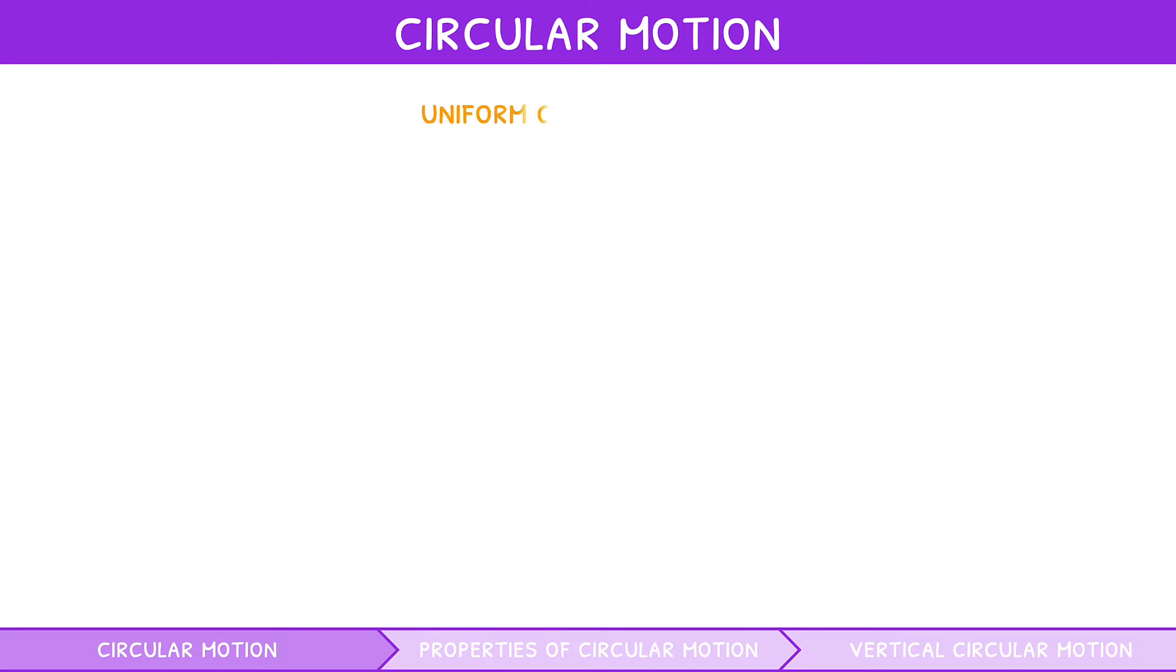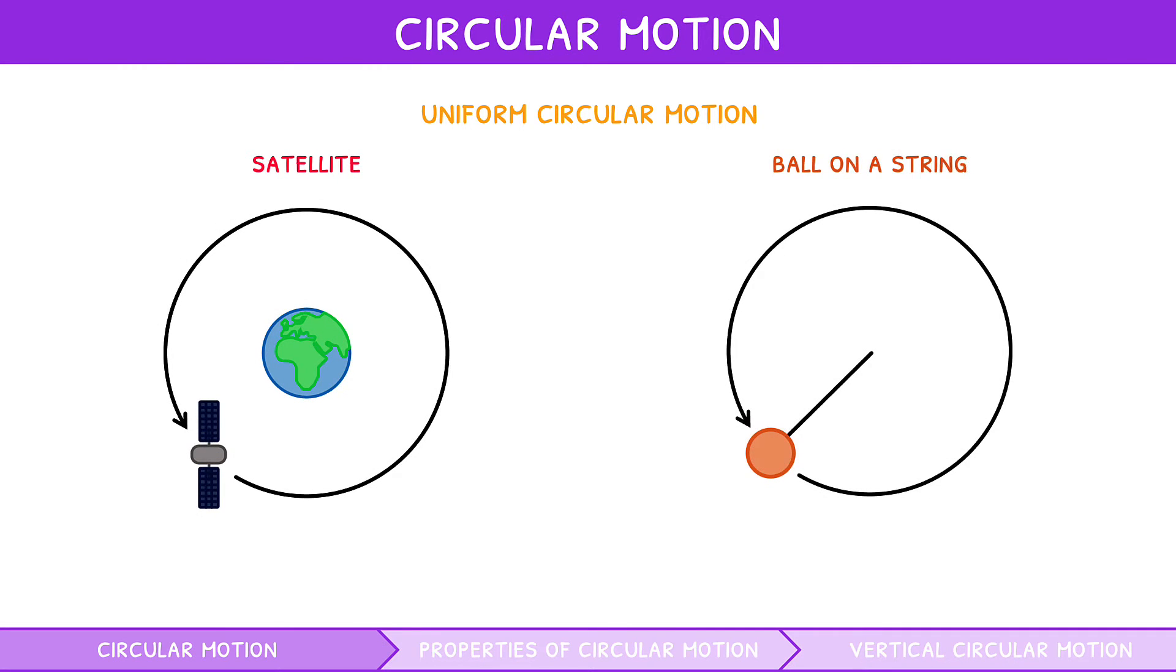For uniform circular motion, the most common examples you will encounter are satellites in orbit and balls on a string. In these examples, the main forces in effect are gravity and tension respectively. However, in circular motion, they are both termed the centripetal force.